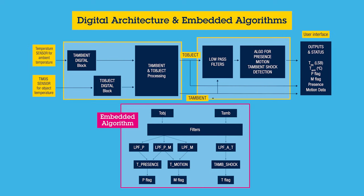All three of these algorithms are digitally configurable in threshold and cutoff frequency to adjust according to your application requirements, and it has the possibility to route the output of the embedded algorithm flags to the hardware interrupt pin. This allows for continuous monitoring of human presence or movement without the intervention of the host microcontroller, allowing for ultra low power detection.